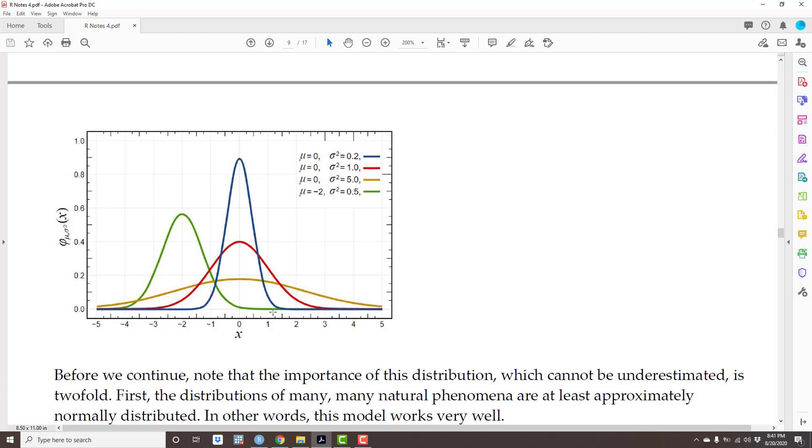However, the variance of the red curve is larger than the variance of the blue curve. What that means is the data is more dispersed around the mean, around the central tendency. So that's what variance means, a measure of dispersion around the mean. If you look at the yellow curve where the variance is much larger, it's much more dispersed.